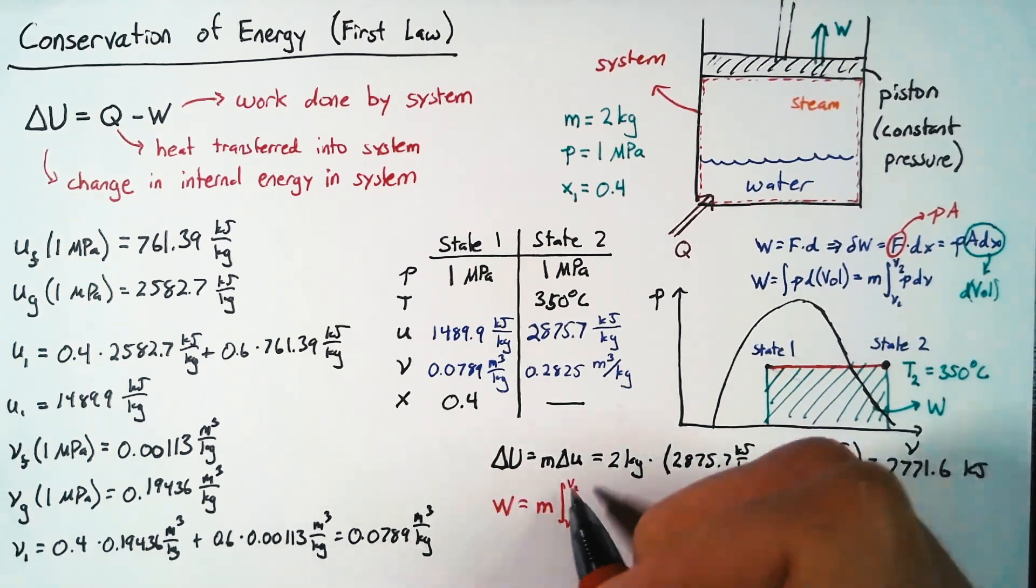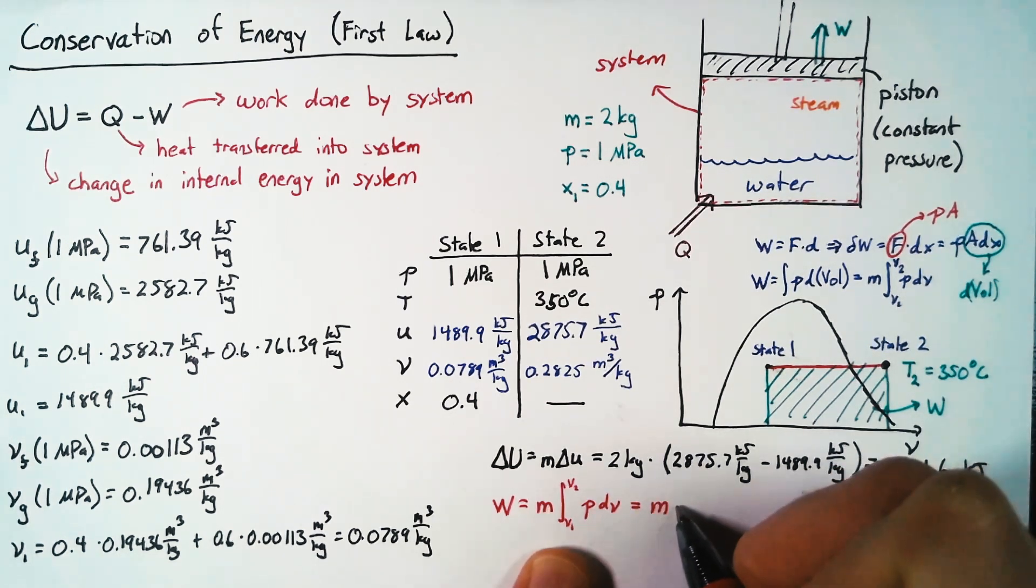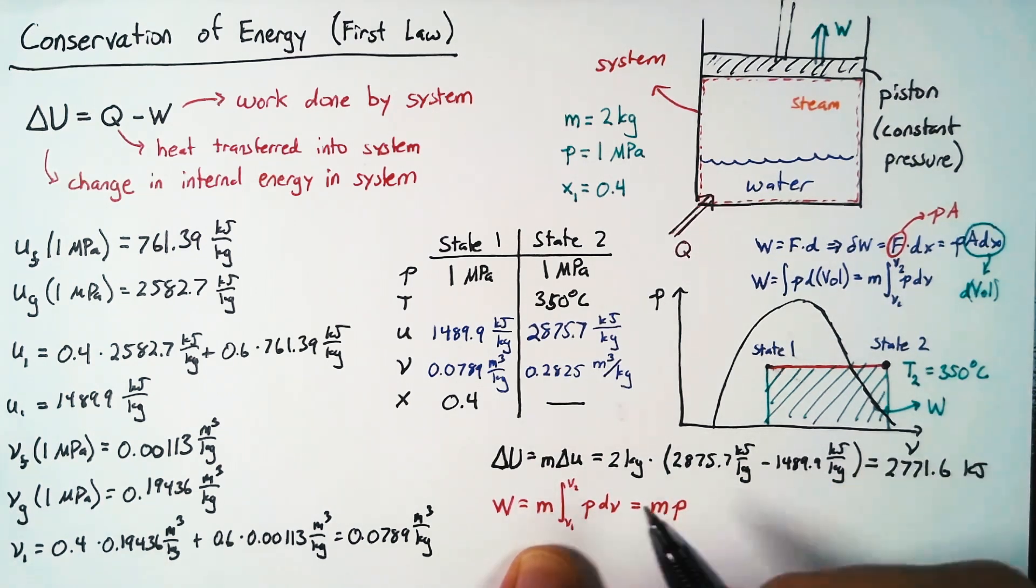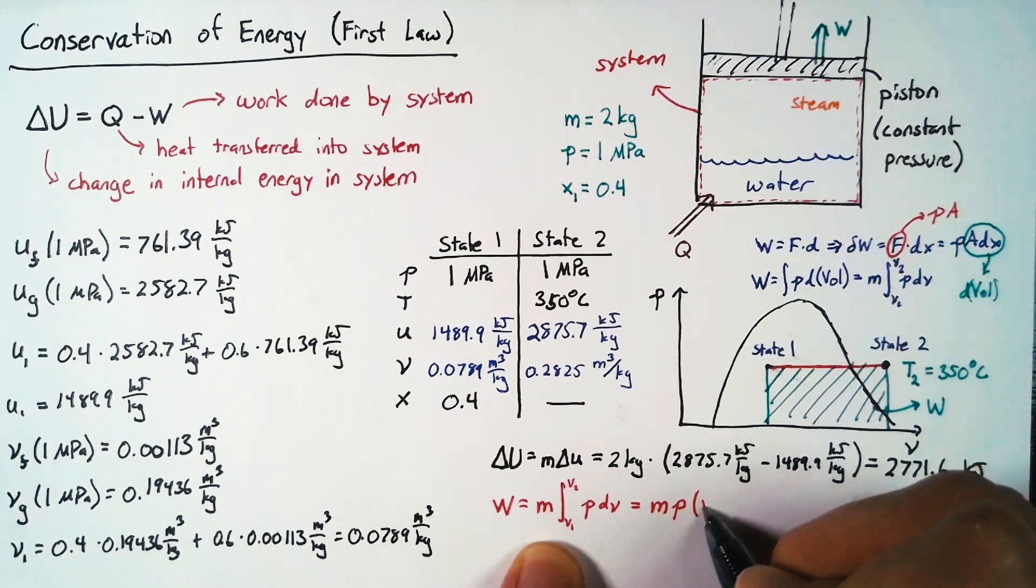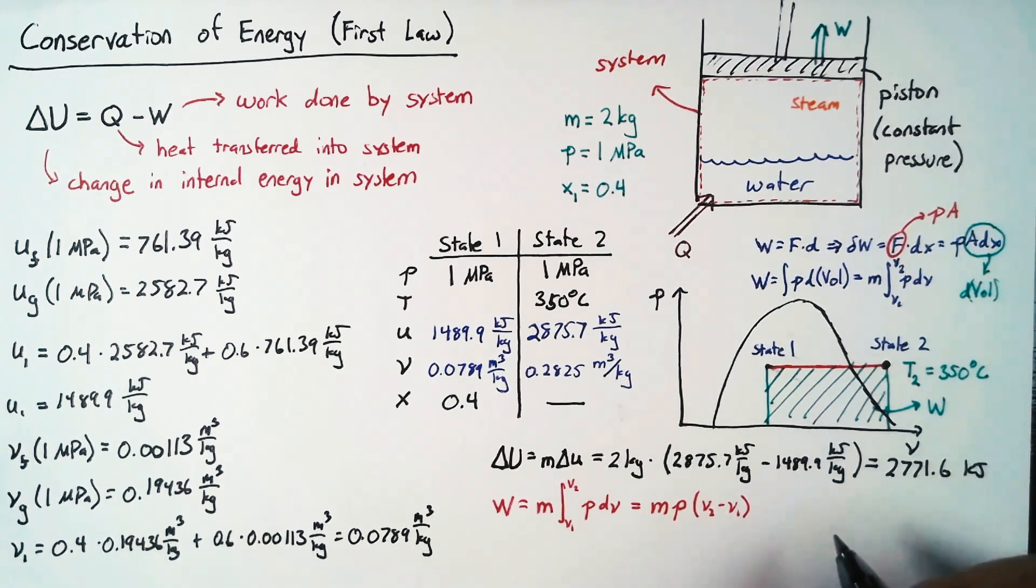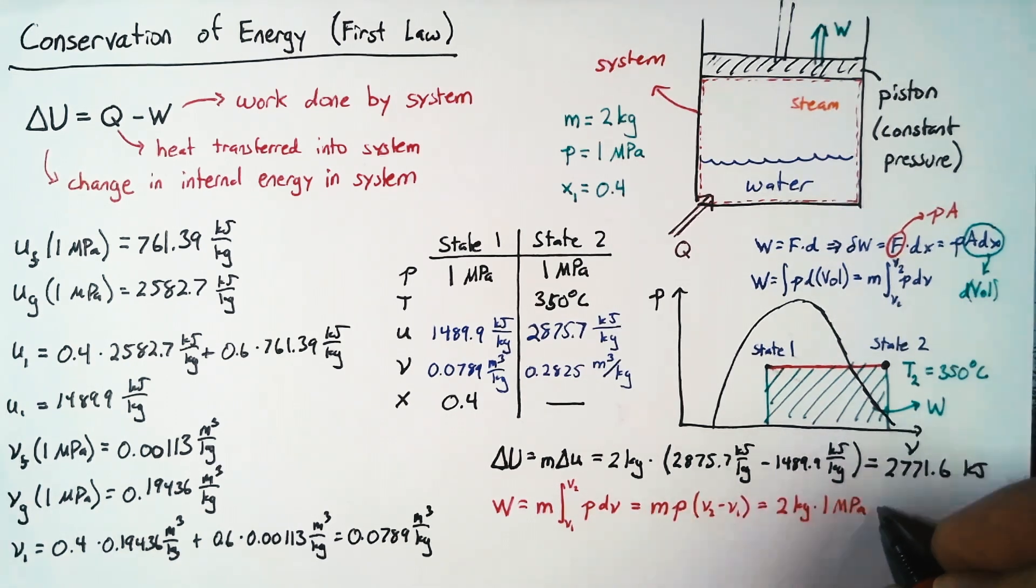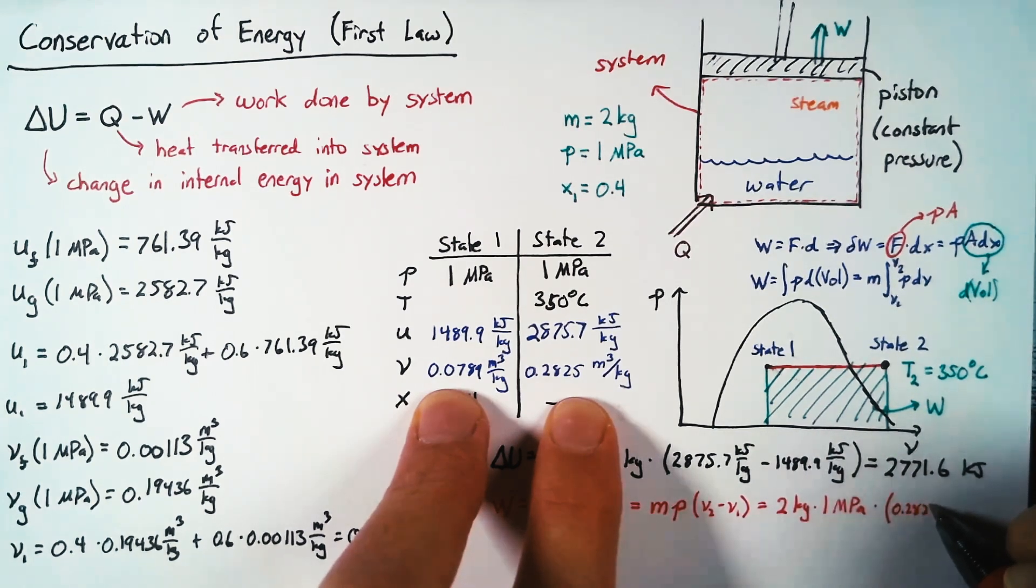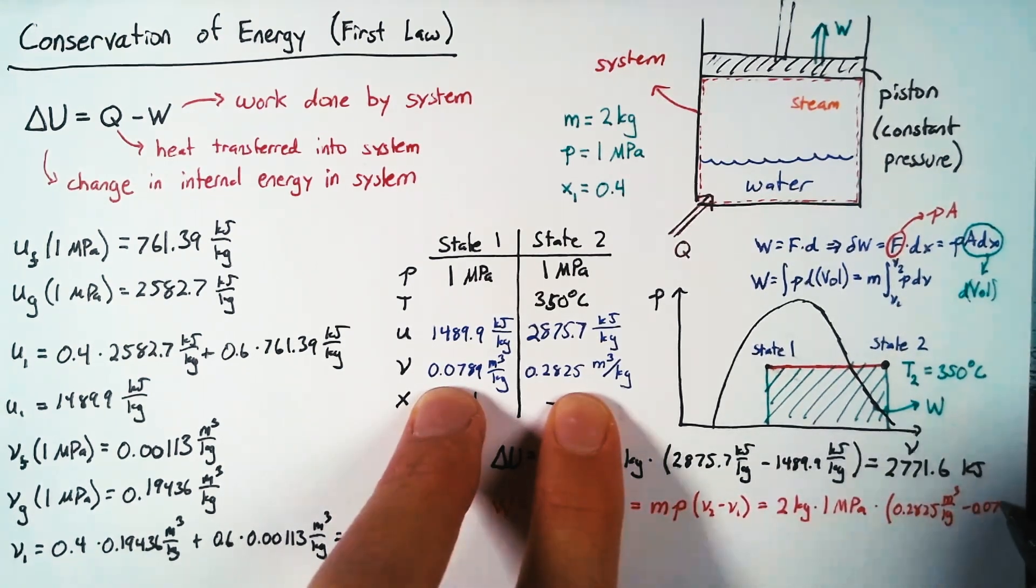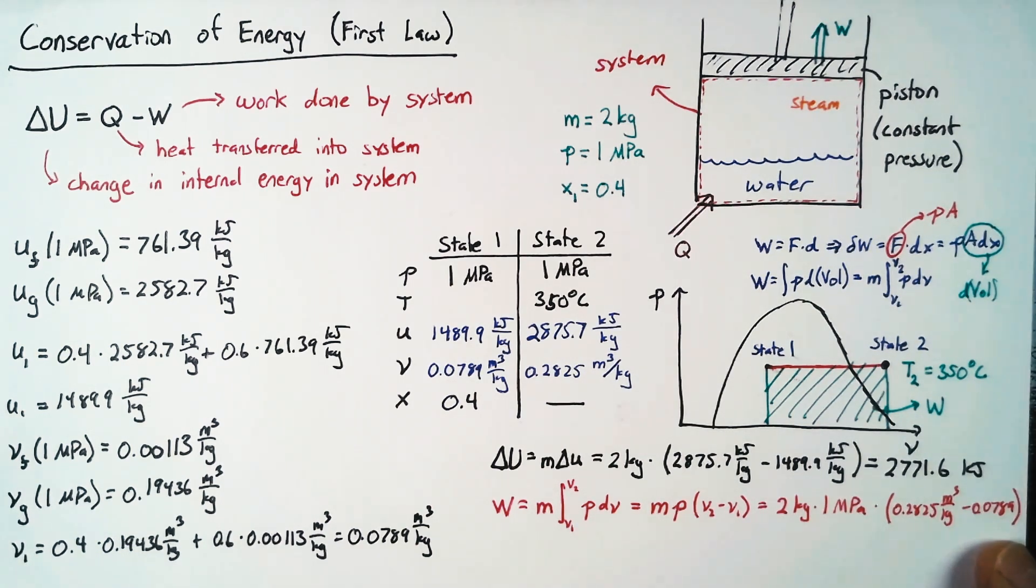So putting that back into math, this pressure is constant for this problem. So the actual integration is really simple. We get to bring that pressure out of the integral, and then this integral just becomes the integral of dv. Well, that's just going to end up being v2 minus v1. So plugging all this in, we get 2 kilograms multiplied by 1 megapascal multiplied by the difference in our specific volumes here. So this is 0.2825, and the units there are meters cubed per kilogram, minus 0.0789. I'll omit the units for that one just because we're out of space. But that gives us our work.